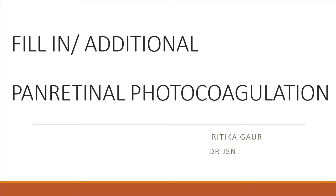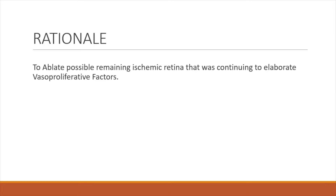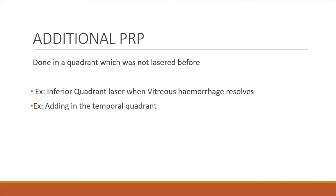Fill-in or additional PRP — the rationale is to treat the possible remaining ischemic retina that was continuing to elaborate vasoproliferative factors. By additional PRP, we mean that it is done in a quadrant which was not lasered before; for example, inferior quadrant laser when vitreous hemorrhage resolves, or adding an additional temporal quadrant laser which wasn't lasered before.